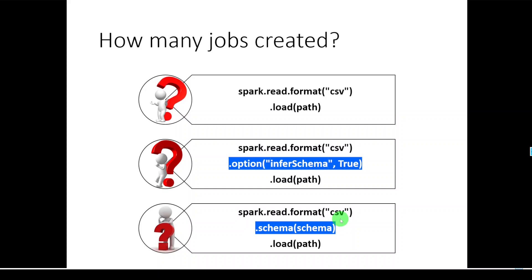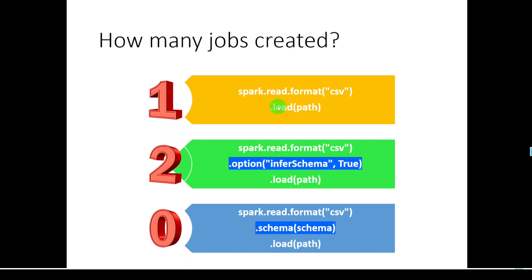So how many jobs would be created in each of these approaches and what is the reason behind those many number of jobs? The answer is: the first method will create only one job, the second method will create two jobs, and the third method will create zero jobs.